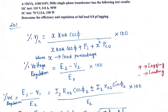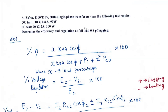The formula for percentage efficiency is: percentage efficiency equals x times kVA times cos φ, divided by x times kVA times cos φ plus Pₐ plus x² times Pcu, into 100. Here Pₐ is the iron loss, Pcu is the copper loss, and x is the load percentage.